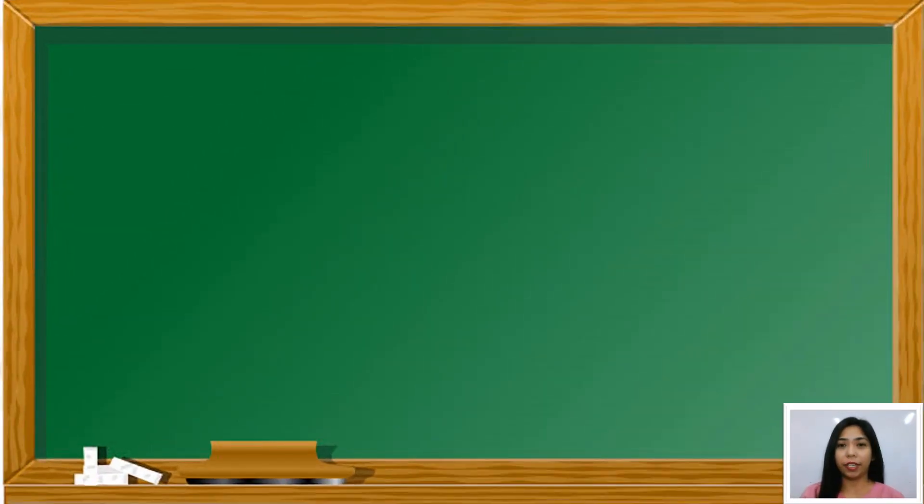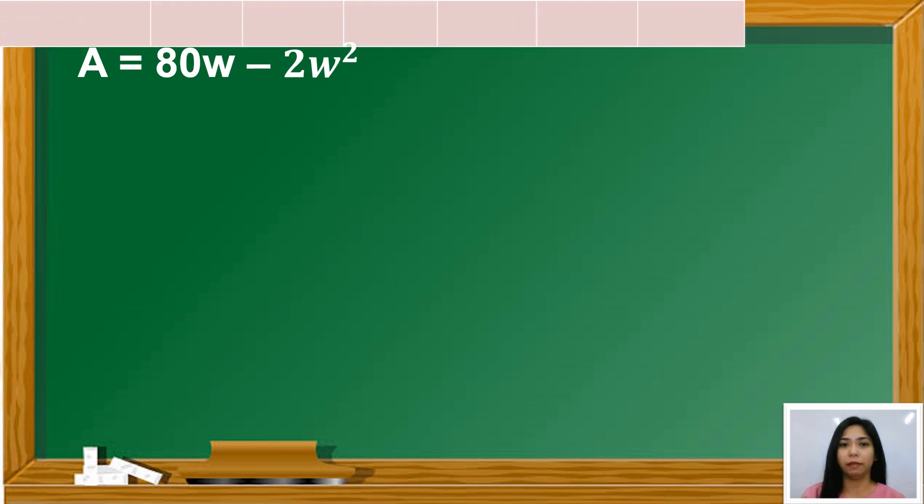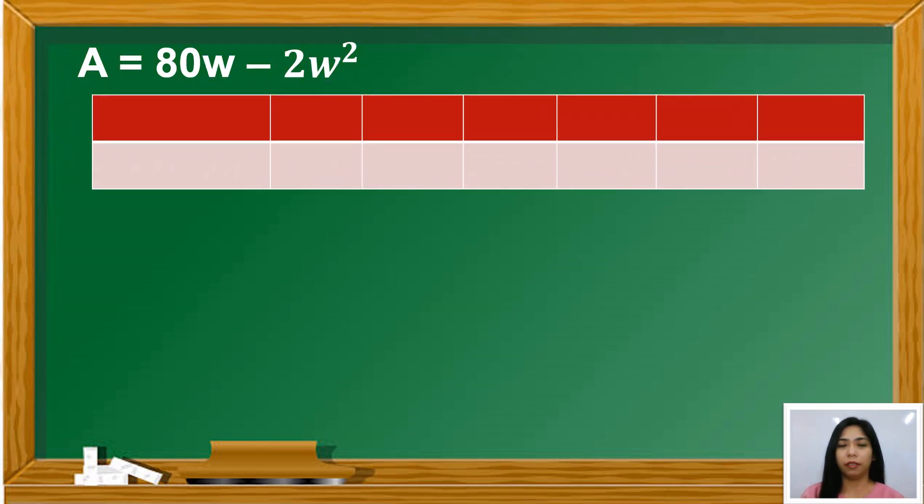From the given area of the parking lot, let's fill up the table by having some possible values of W and the corresponding areas. So our table of values with width and the area. The values for the width are 3, 6, 9, 12, 15, and 18. So let's substitute the value of width to the equation A equals 80W minus 2W squared.